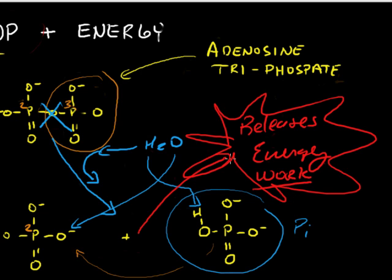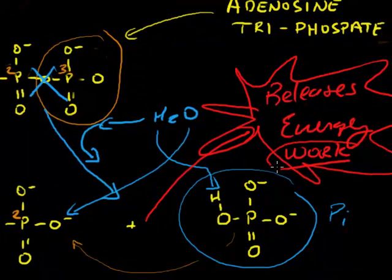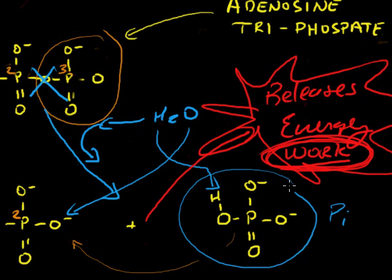So we go from the light energy to the glucose to the ATP, we add water, we break it apart, we get the energy out, and then eventually that's how the work happens in the cell.